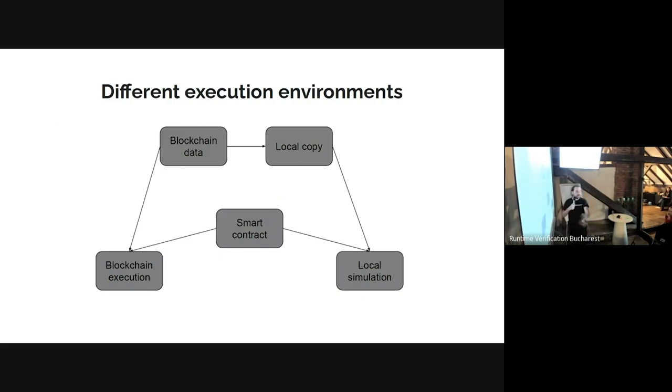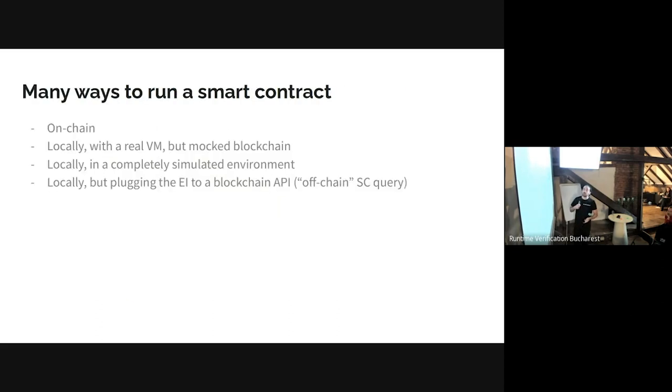You can even in principle do it with real data from the blockchain if you download it. Like, I want to interact with this pair of an exchange. I want to download the data and I want to interact with it. So let's think a bit, how can we run a smart contract? What are the ways in which you can run a smart contract? And this is not an exhaustive list. So of course you can run them on chain, but then you want to run a test. You can also run it locally with a real VM with a mock blockchain. You could also run it locally in principle with an entirely mocked, entirely artificial environment. And we actually use it for debugging contracts.